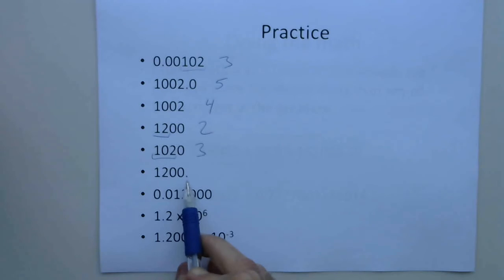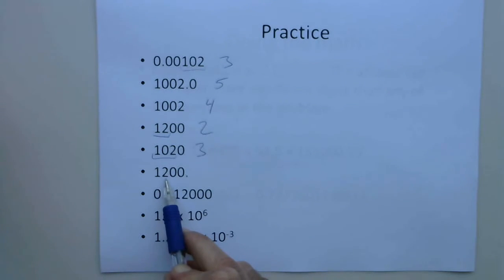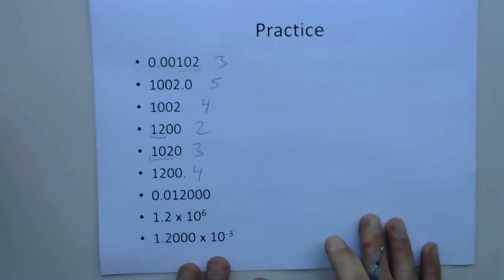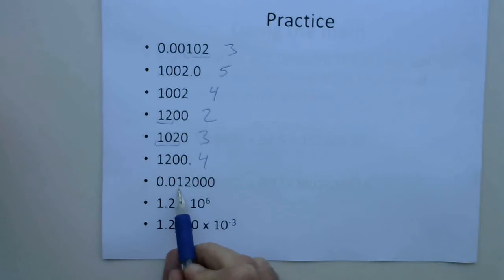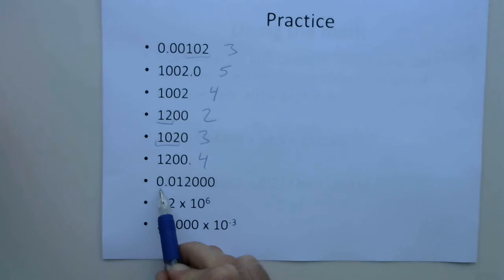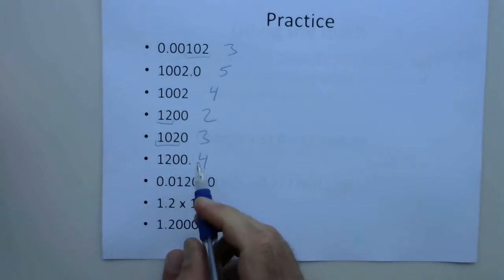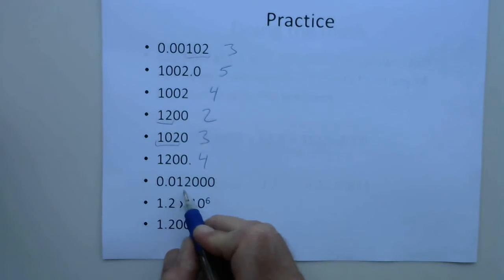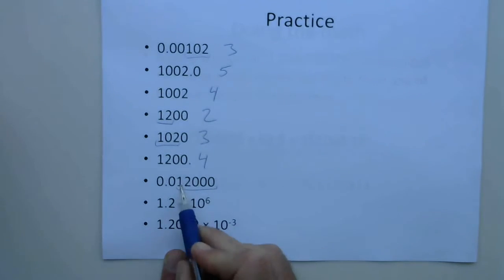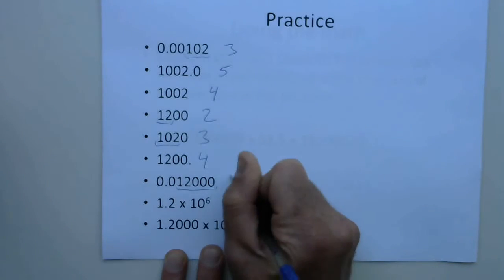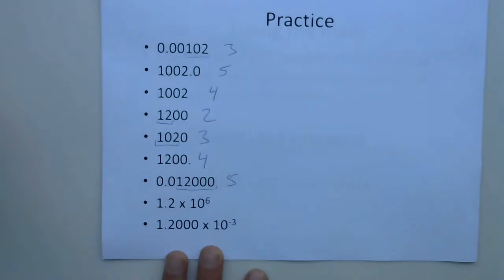This next number has a decimal point, so all zeros at the end after the last non-zero digit do count — that'll have four significant figures. Then, zeros before the first digit do not count, but zeros at the end are significant since we have a decimal point — so this has five significant figures.